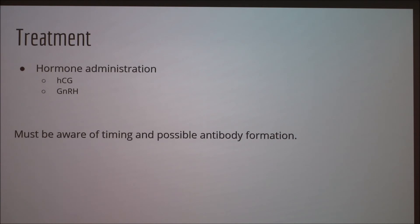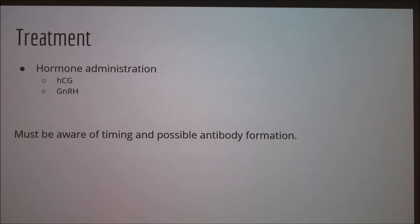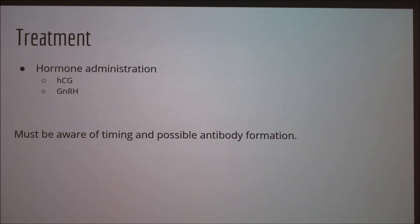To treat ovarian cysts, originally many people would actually induce a manual rupture, but that could sometimes cause hemorrhaging. Current treatment suggestions include administration of hormones that are high in LH. Common injections include the HCG hormone, although sometimes antibody formations are possible with this treatment due to the large molecular weight of the human chorionic gonadotropin hormone.